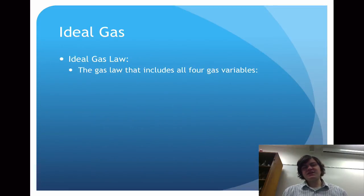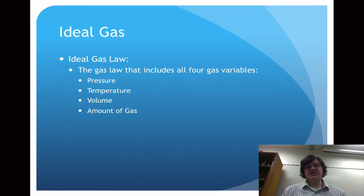The ideal gas law now takes into account all four gas variables. We need to consider pressure, temperature, volume, and amount of gas. For pressure, we can use any of the three different types of pressure measurements that we've talked about: kilopascals, atmospheres, or millimeters of mercury.